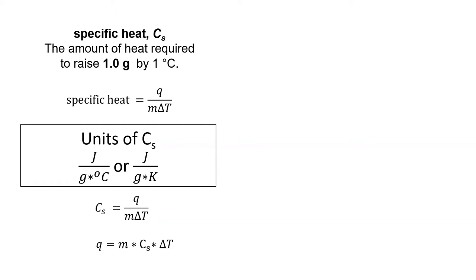If we rearrange the equation for specific heat, we get q equals mass times specific heat times change in temperature. Colloquially, many people say this as q equals mc delta t, or q equals mcat. This equation allows us to calculate heat flow for an object when the object's temperature changes.